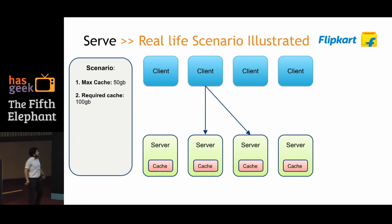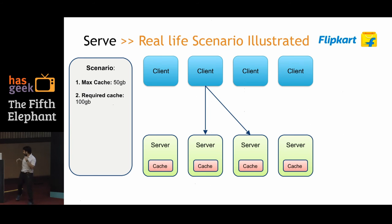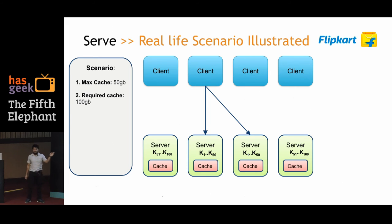Let's look at a real-life scenario. Each node in the cluster can support a maximum cache size of 50 GB, while the data set to be cached is 100 GB. We distribute this 100 GB over a key space of K1 to K100. Since one node can only host 50 GB, we create two mutually exclusive partitions: K1–K50 and K51–K100. Each shard has one replica for high availability, so nodes 2 and 3 host K1–K50 and nodes 1 and 4 host K51–K100.